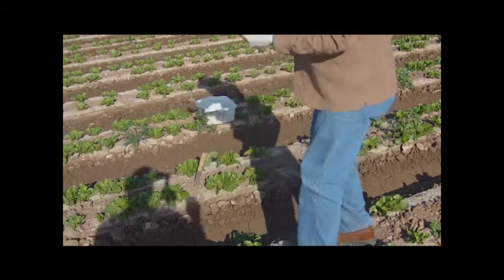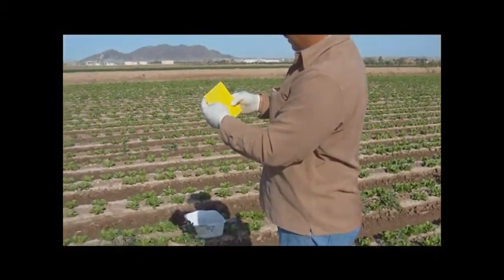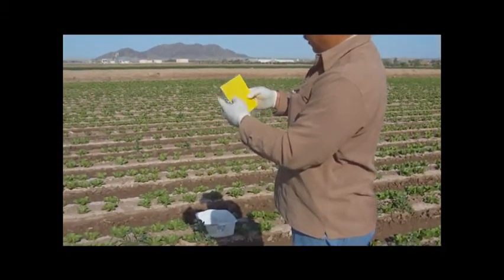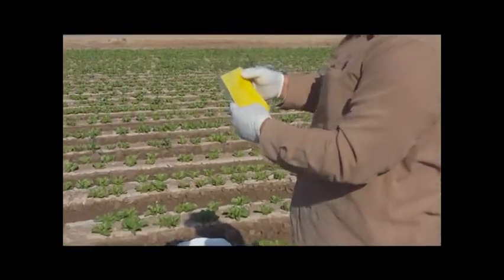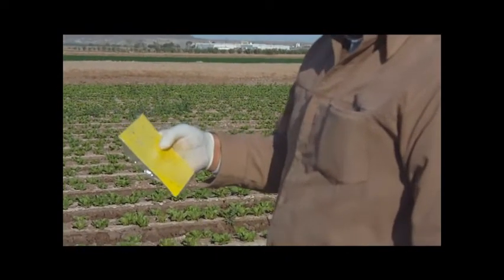As you can see on the naked eye, you can see a lot of adults, thrips adults and also a few larvae on there. Once we've done this, we'll go ahead and take it into the lab, trap it out and count our thrips under the microscope and evaluate the efficacy of some of the treatments here.